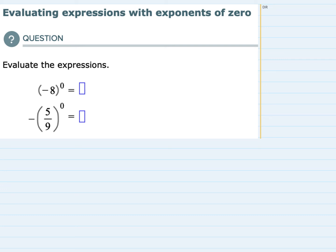Hello, in this video I'll be helping you with the Alex problem type called evaluating expressions with exponents of 0. Our rule for exponents of 0 is that everything being raised to that 0 power becomes 1.